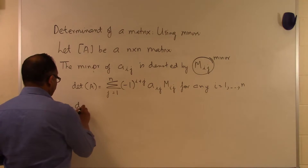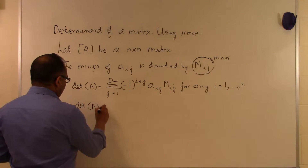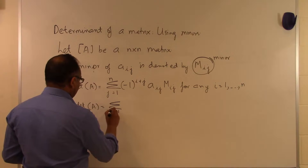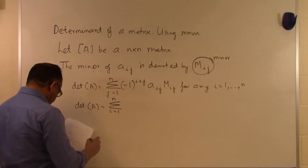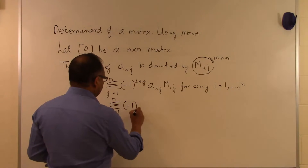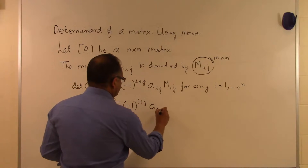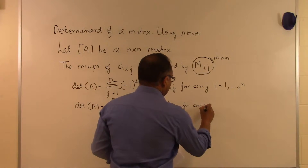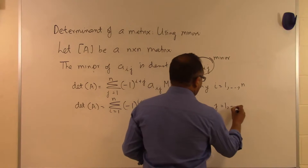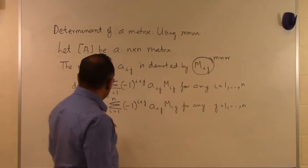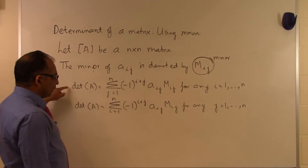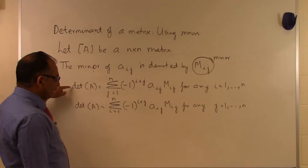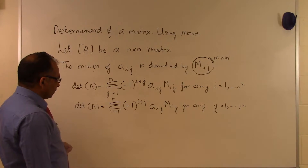We can also find the determinant of A by using any column j. That gives us the equivalent formula: sum over i from 1 to n of (-1)^(i+j) times A_ij times M_ij, for any fixed j from 1 to n. The first formula expands along any row i, and this second formula expands along any column j.